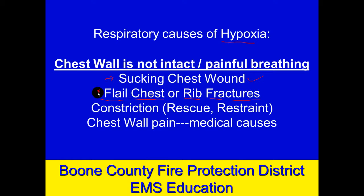With flail chest — though uncommon — if your third, fourth, and fifth ribs are all broken in two places adjacent to each other, the segment in between the breaks is not going to function well. As you inhale and your chest should be going out, that flail segment will suck in; as you exhale, it will expand out or flail out — an unstable chest wall segment. It could also be something more uncommon: a rescue situation like a trench collapse or heavy structural collapse where there's so much weight on the person's chest they're not able to breathe.